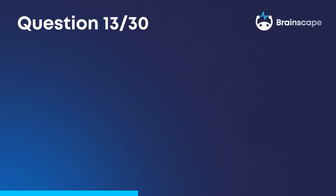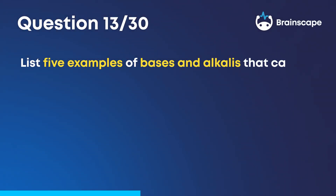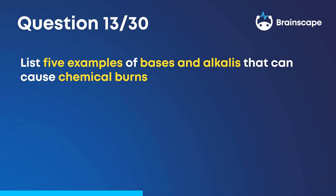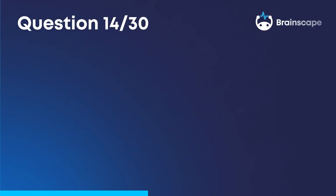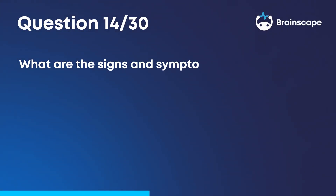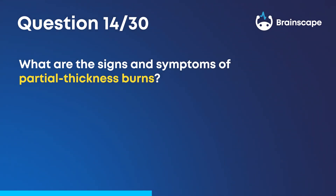Question 13. List five examples of bases and alkalis that can cause chemical burns. Potassium, hydroxide, lime, drain cleaner, and lye. Question 14. What are the signs and symptoms of partial thickness burns? Blisters, redness, and pain.